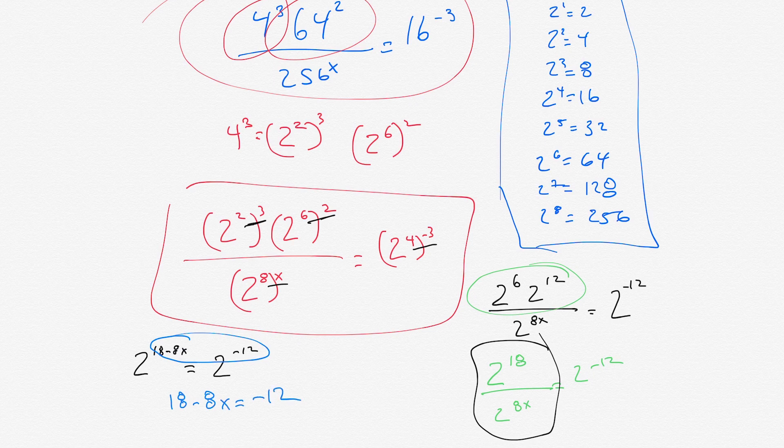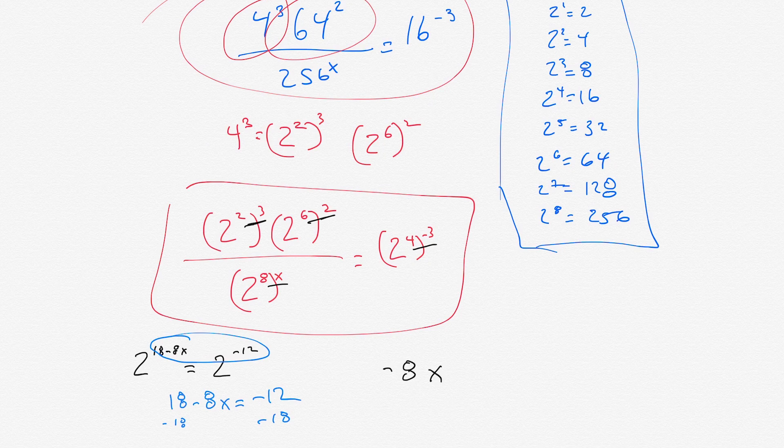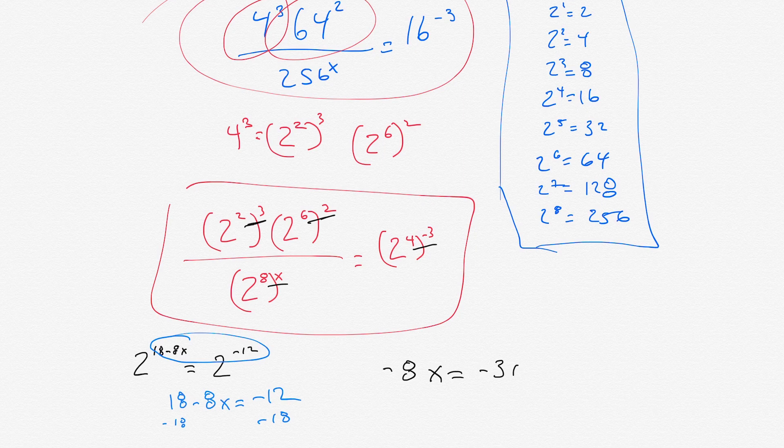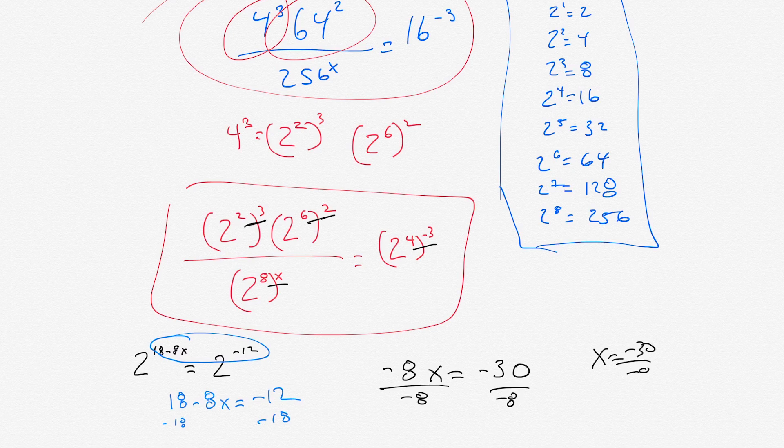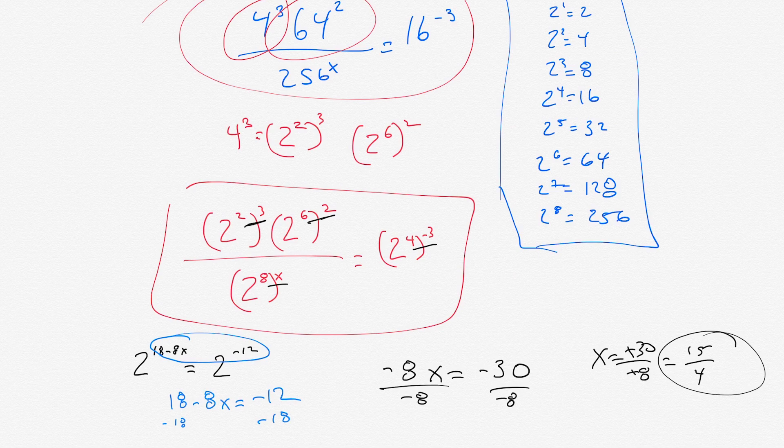Now, it's just a simple algebra equation. At this point, we just subtract 18 from each side. Then, we get negative 8x equals, negative 12 minus 18 is negative 30. Then, we just divide negative 8 from each side. So, we get x equals negative 30 over negative 8, which simplifies to positive 30 over positive 8. So, 15 over 4. That's the answer, 15 fourths.